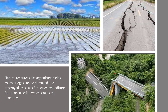In a disaster-affected region, natural resources like agricultural fields and man-made resources like roads, bridges, telephone wires, and electric poles are all damaged or destroyed. This calls for heavy unplanned expenditure for reconstruction, which puts the economy at a great strain, as huge amounts of money have to be reinvested in rebuilding destroyed roads and fallen bridges.